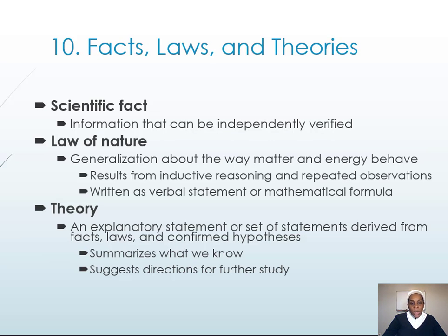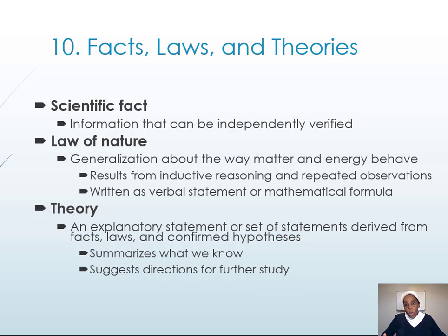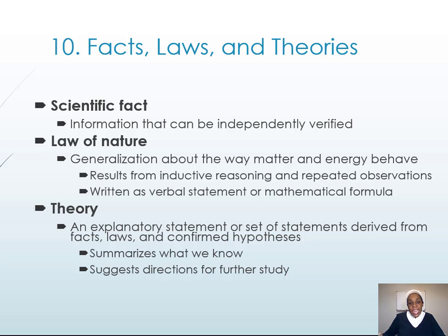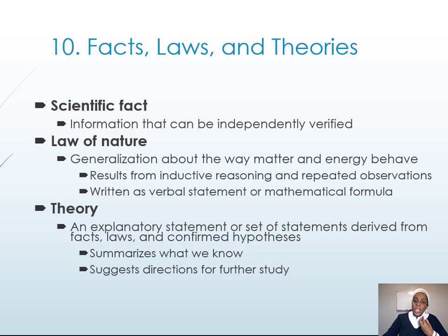Now let's define facts, laws, and theory. A scientific fact is information that can be independently verified — if I do it and it works, you should be able to do it and get the same result. A law of nature is a generalization about the way matter and energy behave — things happening naturally like water flowing, air flowing, pressure, the sun. Laws result from inductive reasoning and repeated observation, and can also be expressed as mathematical formulas. A theory is an explanatory statement or set of statements derived from facts, laws, and confirmed hypotheses. If we do something many times and find the same result across different people, it becomes a theory.